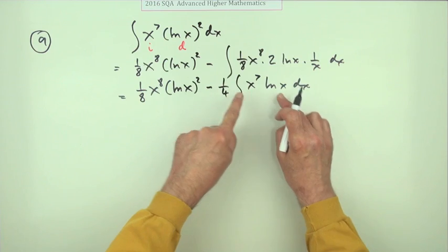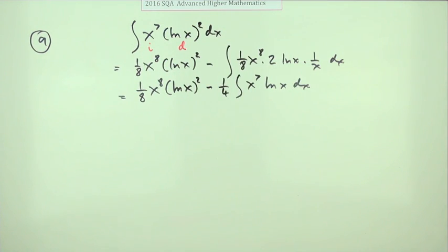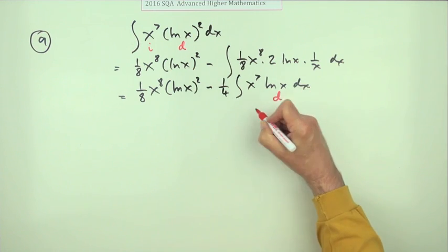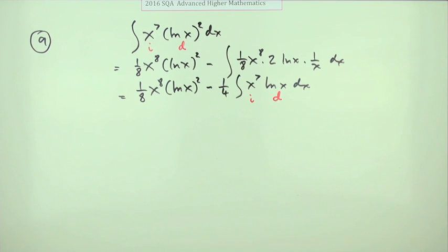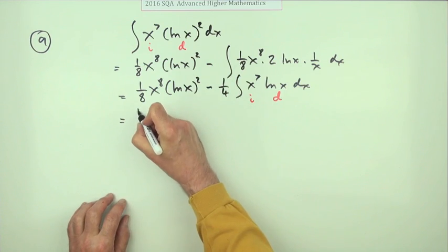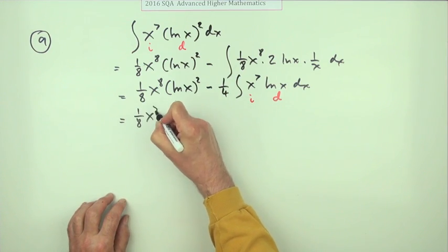We're getting somewhere because that's no simpler than it was to begin with. That plan seemed to work, so we just keep doing that. Differentiate that part, integrate that part. Of course you've got to keep writing this down: 1/8 x^8.